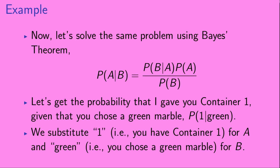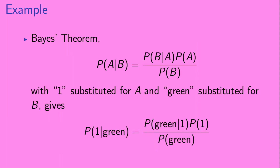Now, let's solve the same problem using Bayes' Theorem. Let's get the probability that I gave you container 1, given that you chose a green marble — so P of 1 given green. We substitute 1 (that you have container 1) for A, and green (that you chose a green marble) for B. So Bayes' Theorem — P of A given B equals P of B given A times P of A divided by P of B — with 1 substituted for A and green substituted for B, gives: P of 1 given green equals P of green given 1 times the probability of 1 divided by the probability of green.